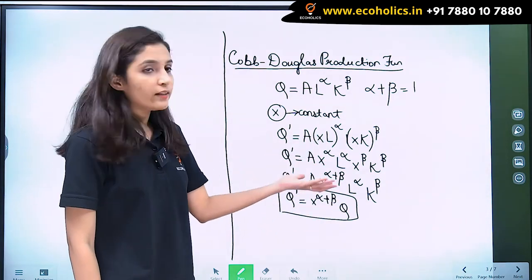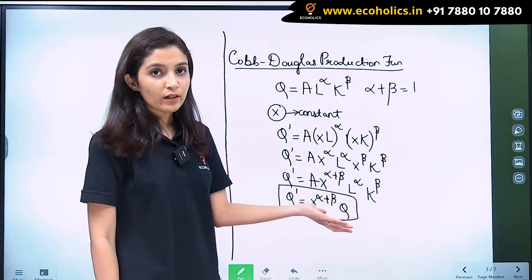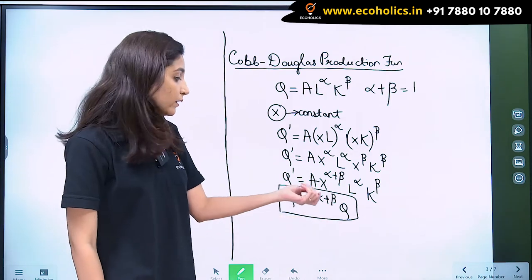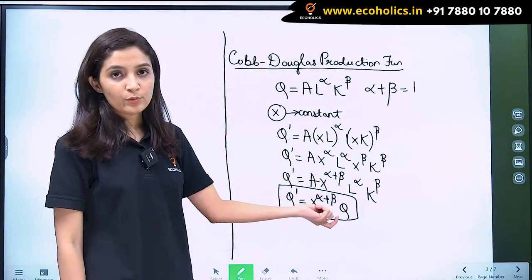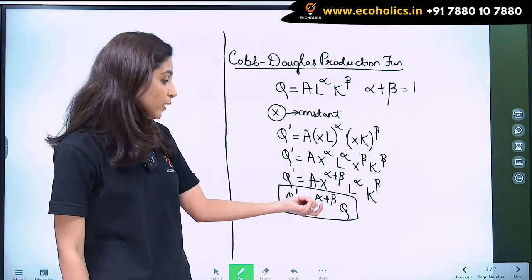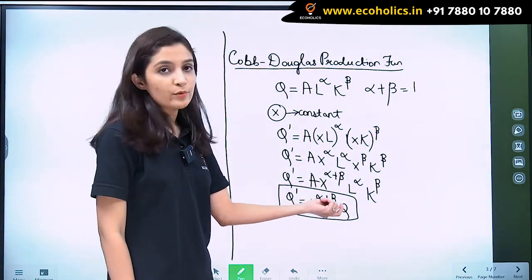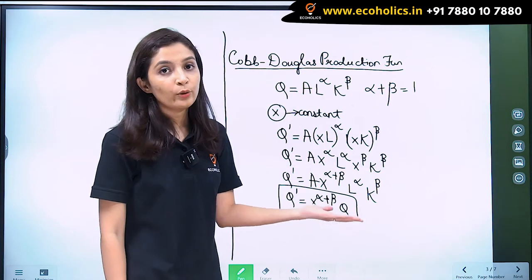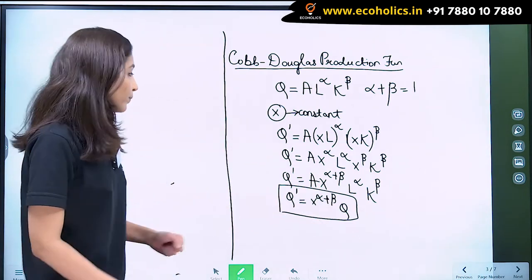So what we get is Q dash equals X raised to alpha plus beta times Q. We can say that this is a homogeneous production function because when we multiply our inputs by some constant X, our output also rises by X raised to alpha plus beta. The linear homogeneous production function is the case when alpha plus beta equals 1.